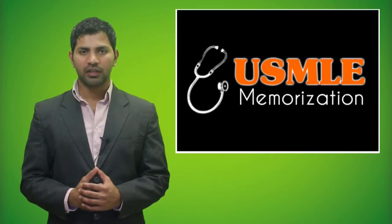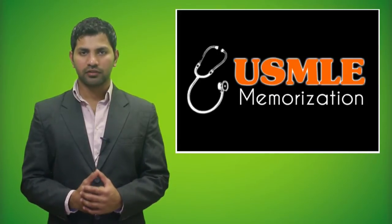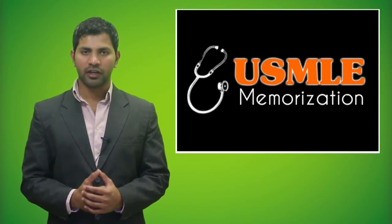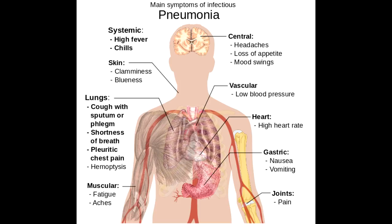Welcome to USMLE Memorizations. Today we're going to talk about the main symptoms of infectious pneumonia. Pneumonia generally has an effect on your entire body. The systemic effects it generally has include high fever and chills.